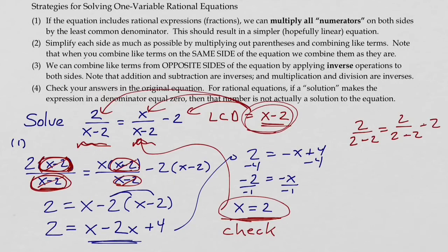We get two over two minus two equals two over two minus two minus two. So lots of twos. But the sad thing, unfortunate I guess, it's not a terrible thing, but it's a little bit sad. Two minus two is zero, and so we have two over zero equals two over zero minus two.